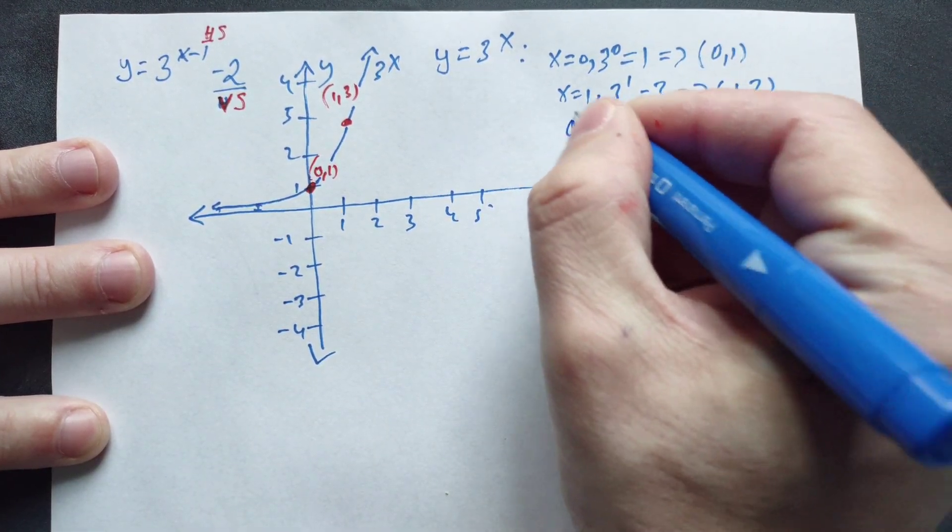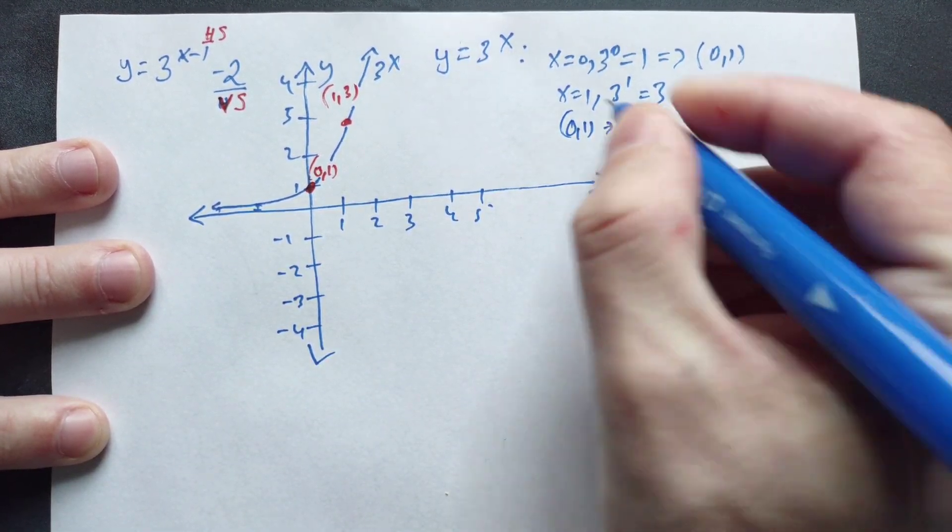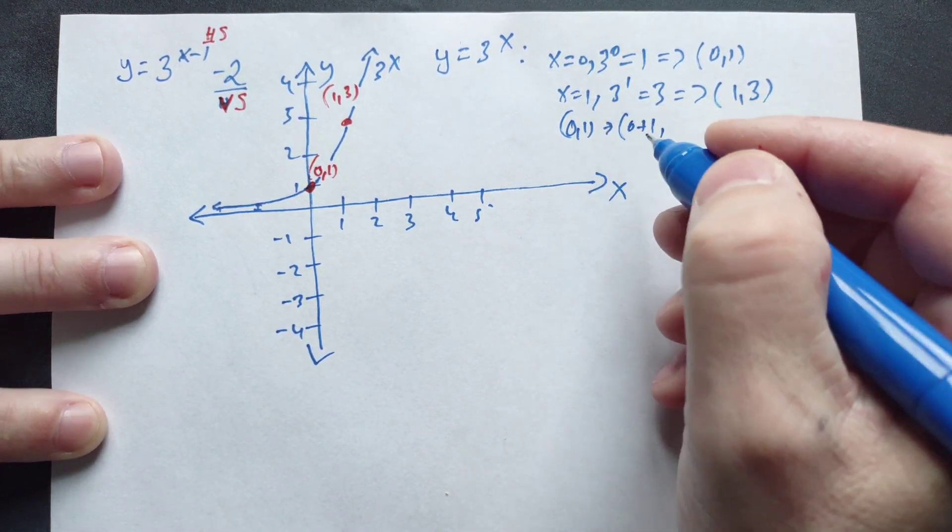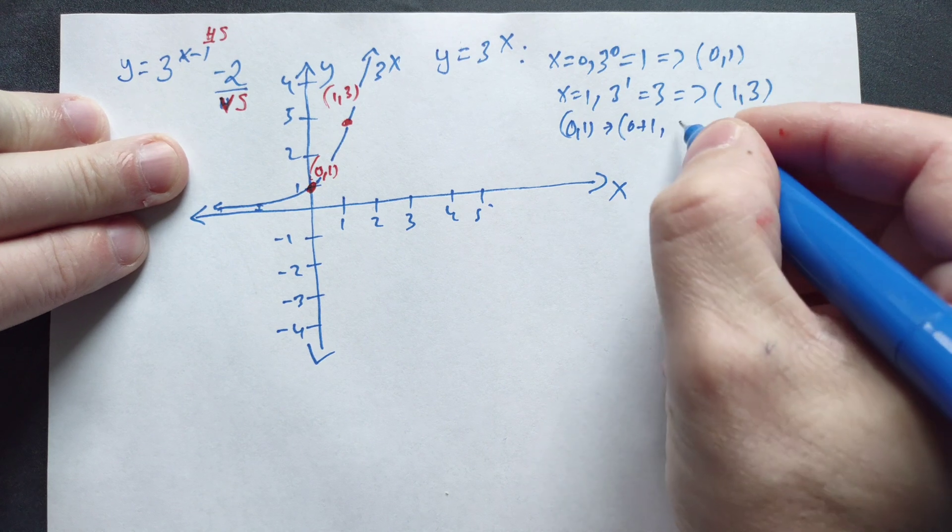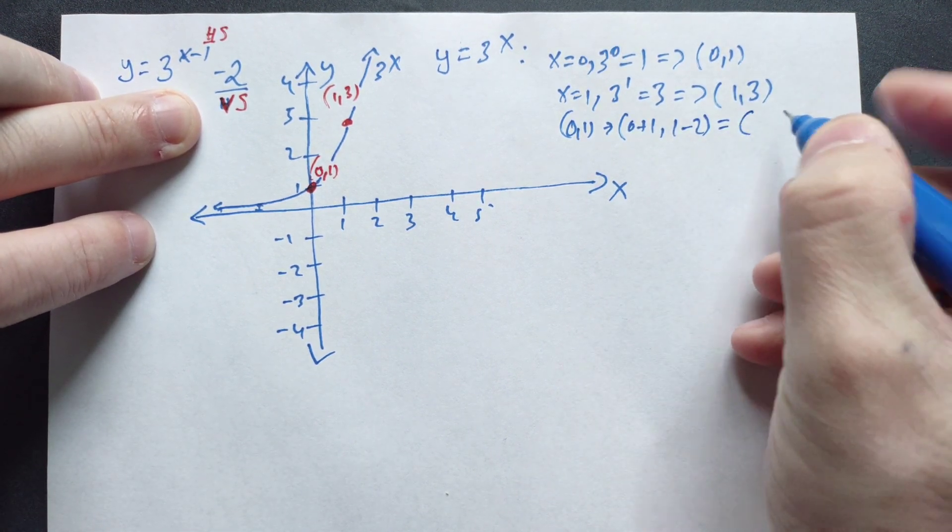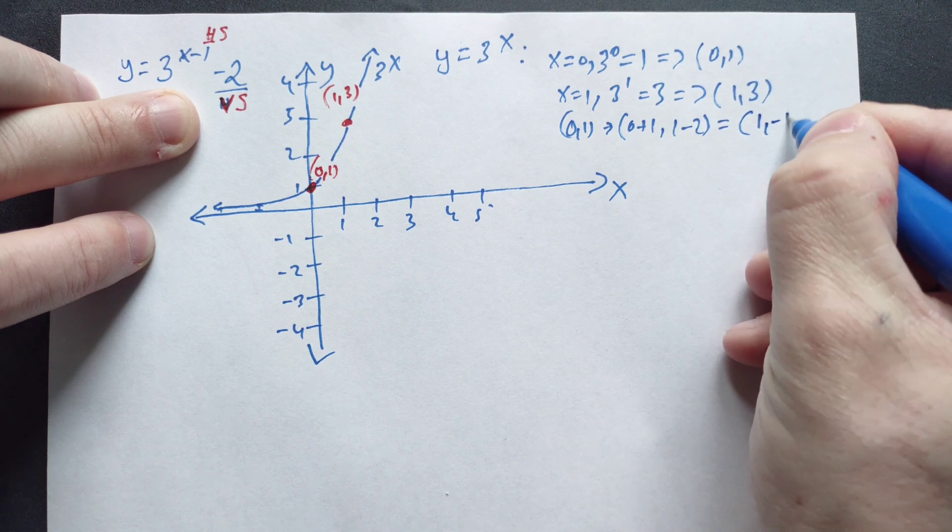So take the point 0, 1, and do exactly what this says. You're going to do 0 plus 1, adding 1 to the x. And then take the 1 and subtract from it 2. And then simplify that to get a new point: 1, negative 1.